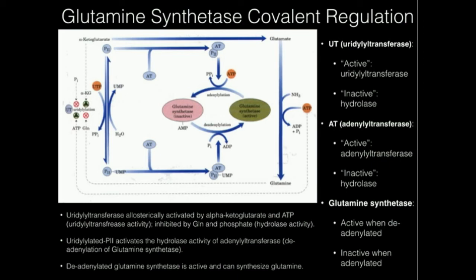So glutamine synthetase is regulated by adenylyl transferase, which is indirectly regulated by uridylyltransferase, which is allosterically regulated by four main effectors. The logic is: if we have lots of ATP and alpha-ketoglutarate, let's do biosynthesis — siphon those off to make glutamine. If we're in low energy with lots of phosphate and plenty of glutamine, let's catabolize it for energy production using glutamate dehydrogenase to convert glutamate into alpha-ketoglutarate for the TCA cycle.